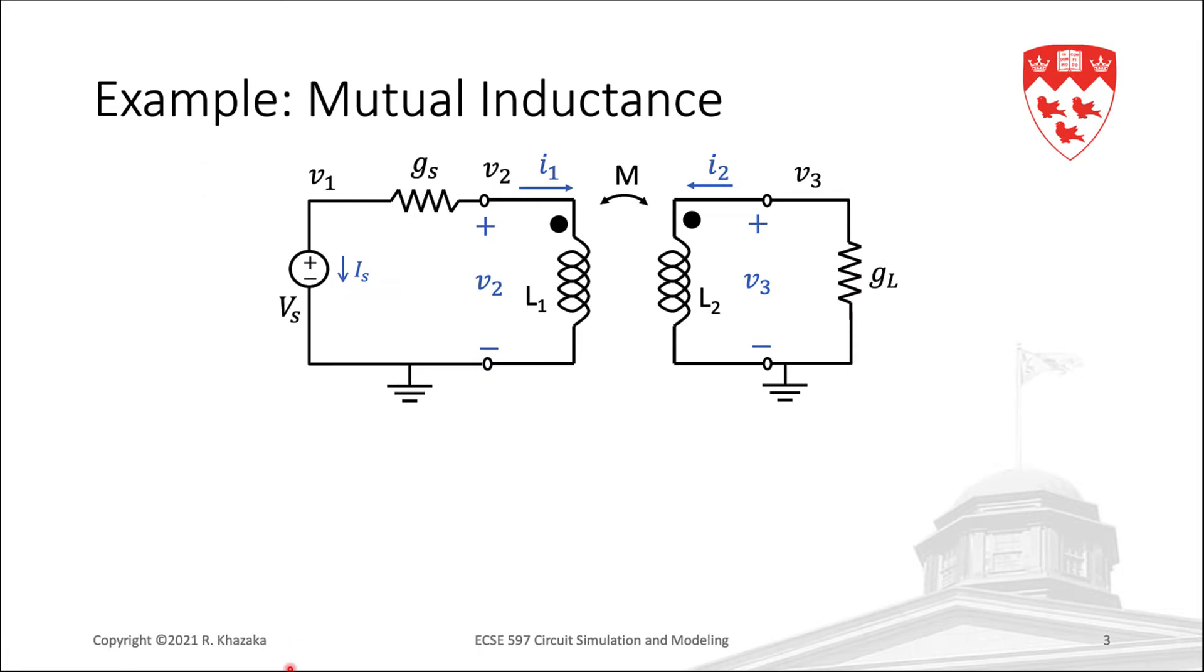Now, we are ready to develop a stamp for mutual inductance. As usual, we will start by analyzing an example, and then we will deduce the stamp by inspection. Let's look at this circuit containing two coupled inductors and write the nodal equations. We start with Kirchhoff's current law at node 1. Here we have the current in resistor GS, GS V1 minus V2, plus the current IS in the voltage source.